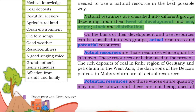Natural resources are classified into different groups depending upon their level of development, use, origin, stock and distribution. On the basis of development and use, resources can be classified into two groups: actual resources and potential resources. Actual resources are those whose quantity is known and are being used in the present — such as the rich deposits of coal in the Ruhr region of Germany, petroleum in West Asia, and the dark soils of the Deccan plateau in Maharashtra.